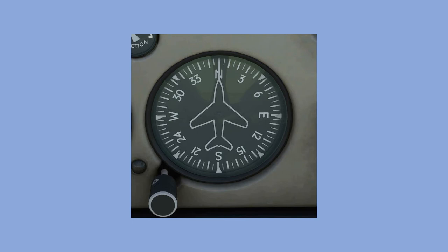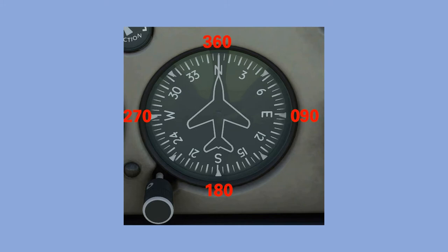The heading indicator, sometimes called the directional gyro, is located on the bottom center of the instrument panel. It uses a gyroscope attached to a compass card to display the compass direction, or heading, the aircraft's nose is facing. The needle at the top of the aircraft symbol indicates the aircraft's current heading, and the compass card rotates as the aircraft turns. There are 360 degrees on a compass — the cardinal headings of East, South, West, and North are located at 90, 180, 270, and 360 degrees. Aircraft headings are always read as three digits, so a North heading would be 360 and East would be 090. The larger marks indicate 10-degree headings and the smaller marks indicate 5-degree headings.